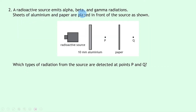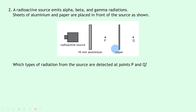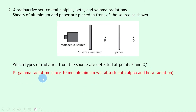Question two says a radioactive source emits alpha, beta, and gamma radiations. Sheets of aluminium and paper are placed in front of the source — 10 millimetres of aluminium placed in front of the source, then a sheet of paper. There is point P between the aluminium and the paper, and point Q beyond the paper. The question asks which types of radiation are detected at points P and Q.